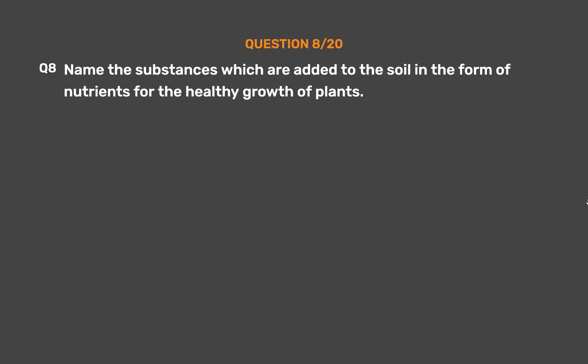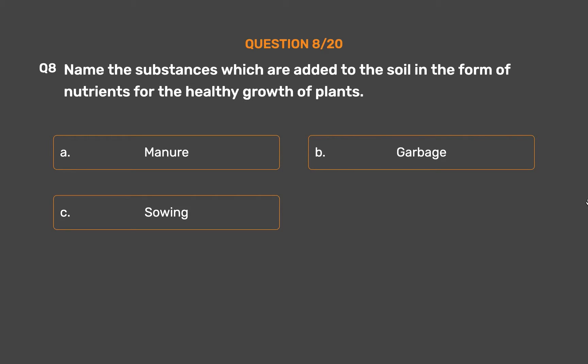Question No. 8: Name the substances which are added to the soil in the form of nutrients for the healthy growth of plants. Option A: Manure. Option B: Garbage. Option C: Sowing. Option D: None of these.